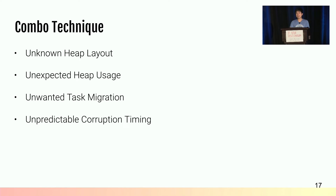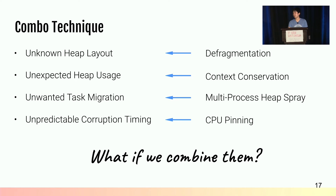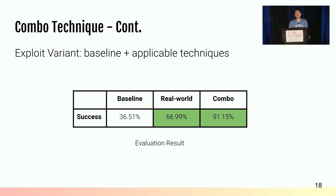From the model, we identified four unreliability factors, and in our study we noticed that each can be mitigated by existing techniques. It seems that unreliability factors are orthogonal to each other and the techniques do not conflict. Naturally, the question is: what if we combine the techniques together? We applied all applicable techniques to the baseline exploit to form the combo exploit variant, then evaluated the combo technique. The result shows that the technique combination derived from our systematic study outperforms both the baseline exploit and real-world exploits substantially.